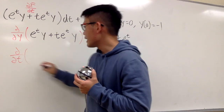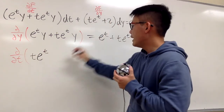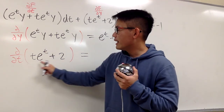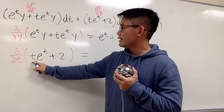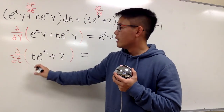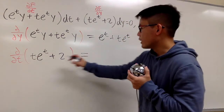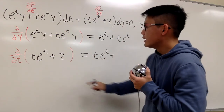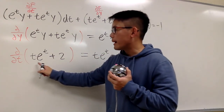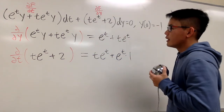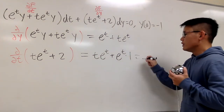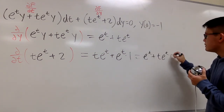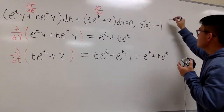Now we're doing the mixed partial — differentiating with respect to T. We have T e to the T plus 2. In the T world, T is the variable. This is a product of two functions, so we use the product rule: keep the first function T, multiply by the derivative of the second which is e to the T, then add e to the T times the derivative of T which is 1. The derivative of 2 is 0. Simplifying: e to the T plus T e to the T — they are the same, so this is indeed an exact equation.